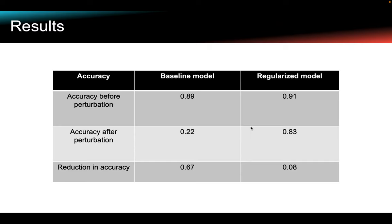The table shows the overall results. The effectiveness of adversarial regularization on improving model robustness is immediately apparent by the drastic reduction in our baseline model's performance on the adversarially perturbed data as compared to that of the regularized model. Performance on our baseline model has dropped 67%, while our regularized model has only an 8% drop in performance.